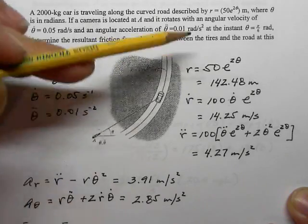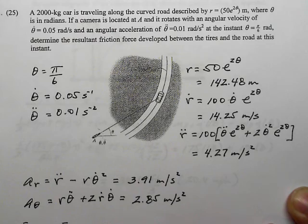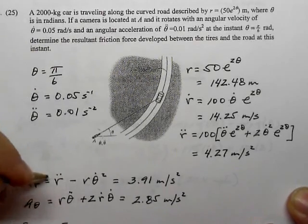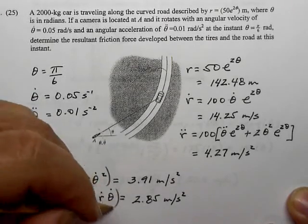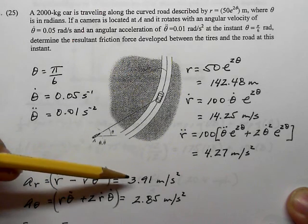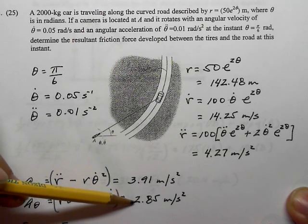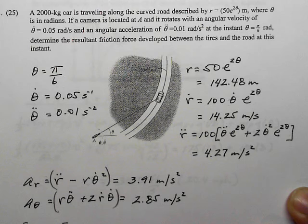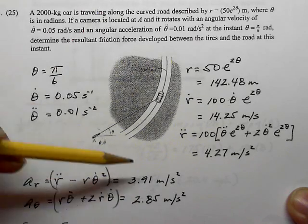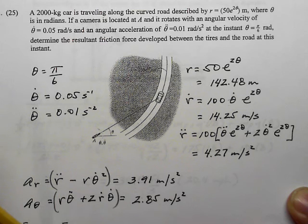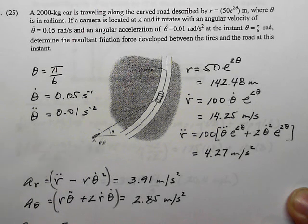At this point we have enough information to go to the equation sheet, get our cylindrical coordinates acceleration formulas, and calculate the radial and theta pieces of acceleration. Plugging in the r and θ information, we get a radial acceleration of 3.91 and a theta direction acceleration of 2.85. To find the friction force using F = ma, we need the total acceleration — we pythagorize these two because they are at right angles. Force equals mass (2,000 kg) times the pythagorized acceleration, giving a friction force of 9.68 kilonewtons.